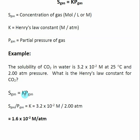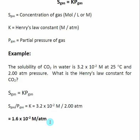We solve this equation for K — that's simply the solubility of CO2 divided by the partial pressure of CO2. From that, we get our Henry's Law constant for this particular situation. Remember that the units on a Henry's Law constant are molarity per atm.